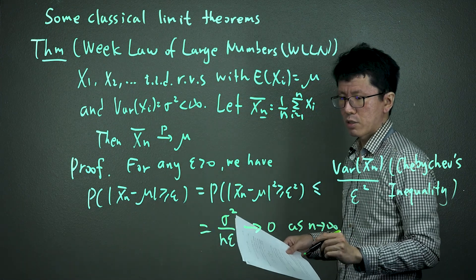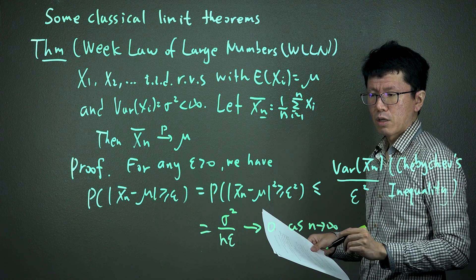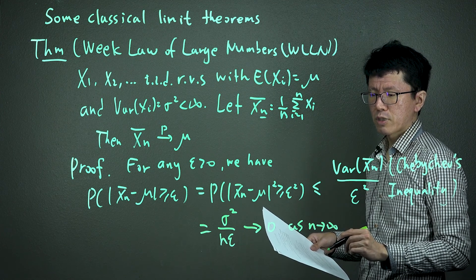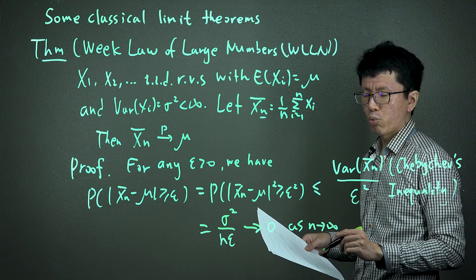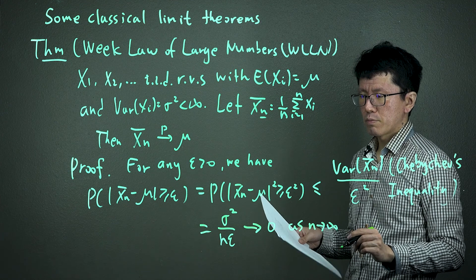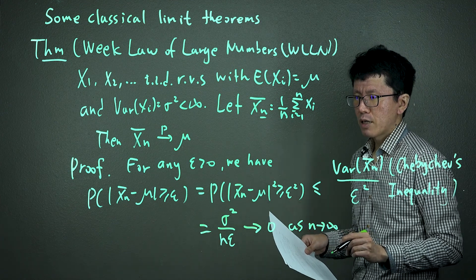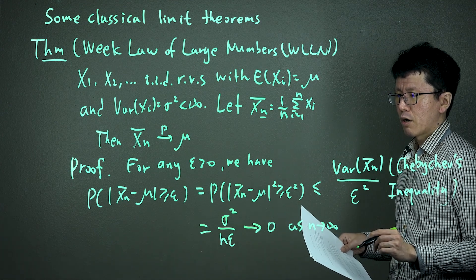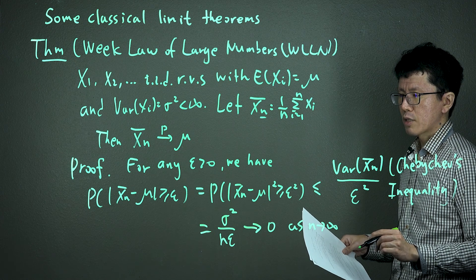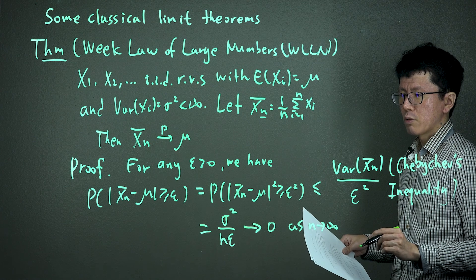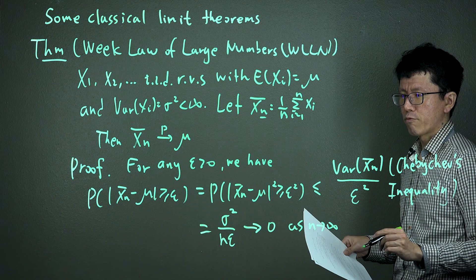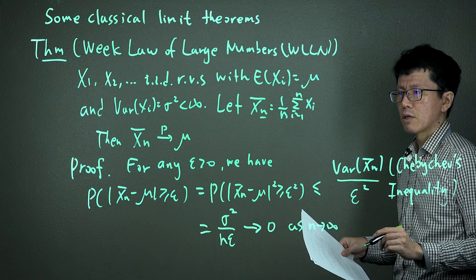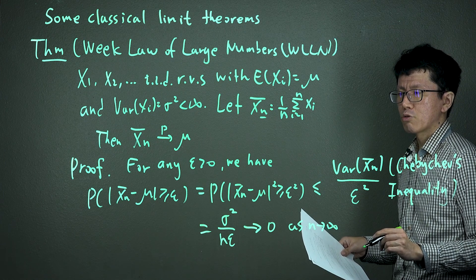This equals sigma squared divided by n times epsilon squared, and it goes to zero as n goes to infinity. As n goes to infinity, the denominator gets larger while the numerator sigma squared is fixed. So that implies the probability of the absolute distance between X-bar_n and mu being greater than or equal to epsilon goes to zero, meaning X-bar_n converges in probability to mu.